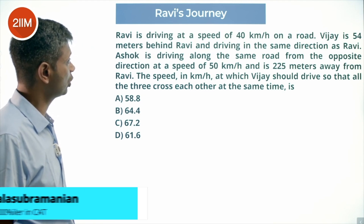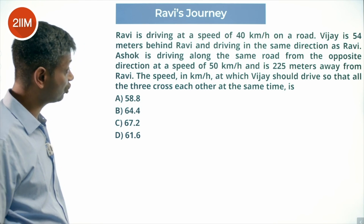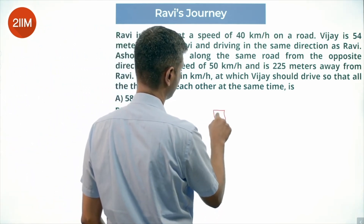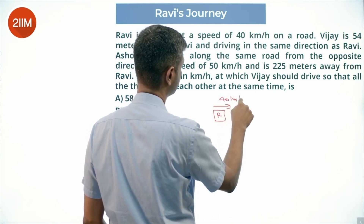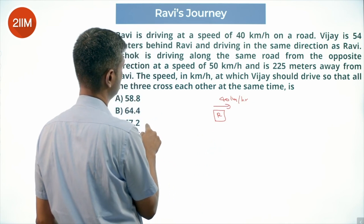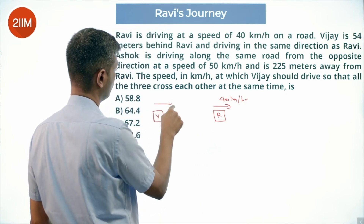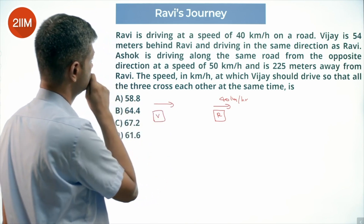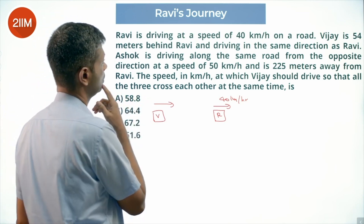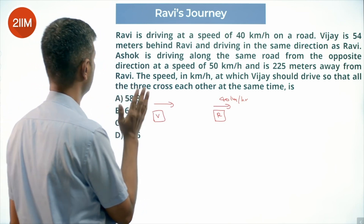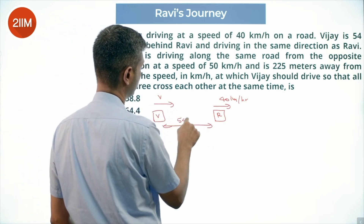Ravi is driving at a speed of 40 kilometers per hour on a road. Vijay is 54 meters behind Ravi and driving in the same direction. Ravi is going at 40 kilometers per hour, Vijay is driving at some v kilometers per hour in the same direction, and this distance between them is 54 meters.